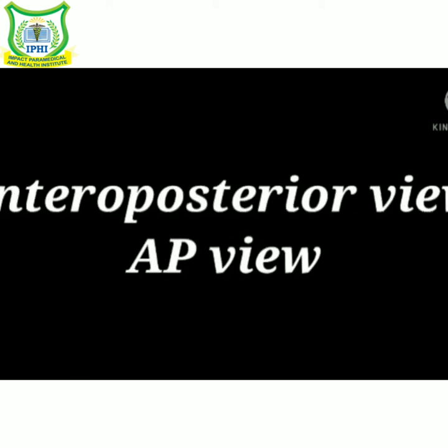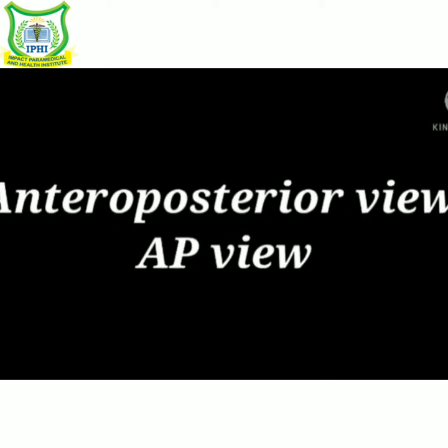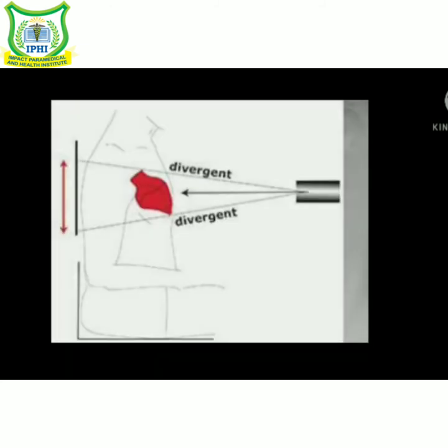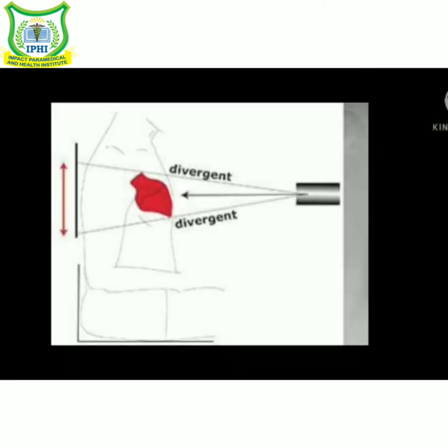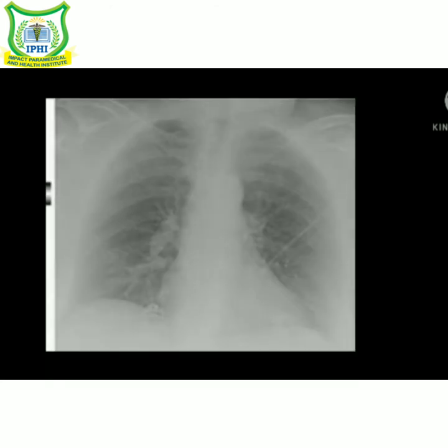Next is anterior posterior view. In this, the patient is standing with back against the cassette. Shoulders are brought downward and forward with back of hands below hips and elbows well forwards. The centering is at the level of sternal angle.